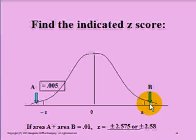This tail is the same size as the A tail, and so our z-score here, since our curve is symmetrical, is the same as the negative z-score, but it is positive. So it is positive 2.58.